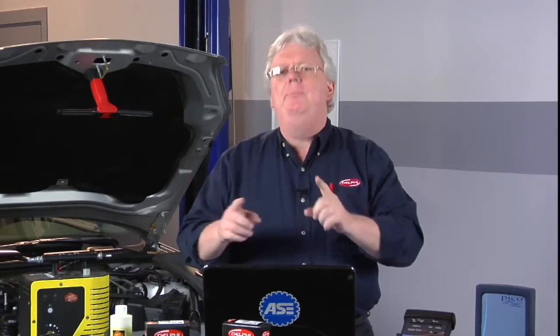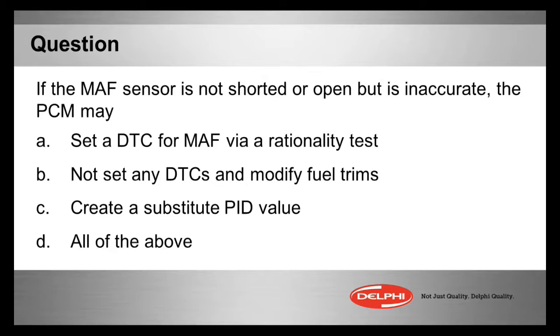Let's go to a question about a mass air flow sensor that's not shorted, not open, but inaccurate. The PCM may do one of the following: A, set a DTC for mass air flow using a rationality test; B, not set any DTCs but modify the fuel trims; C, create a substitute PID value; or D, all the above. Make your selection now.